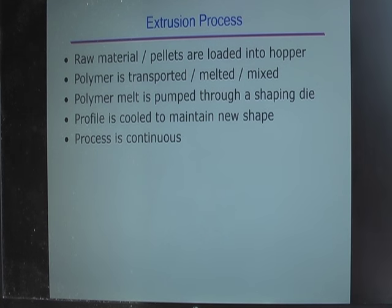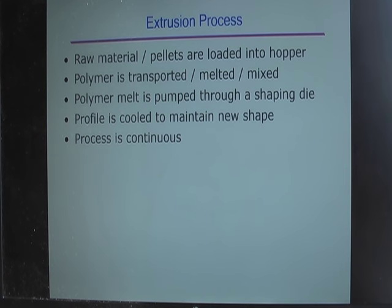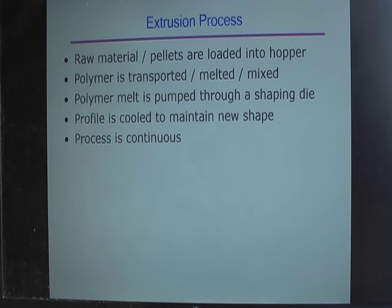Here is how we describe the extrusion process: first you load your raw polymer material into the hopper, then your polymer is transported, melted, and mixed. Then it is pumped through a shaping die, and then the product is cooled to maintain its new shape. This process is continuous.